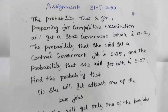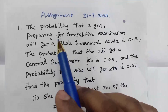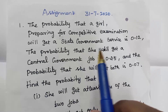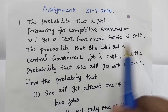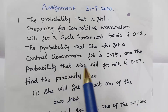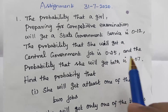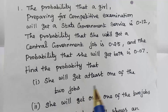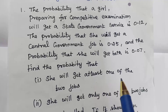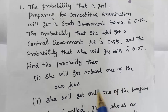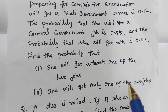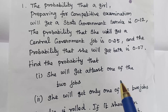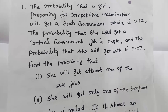I gave three problems. First one: the probability that a girl preparing for competitive examination will get a state government service is 0.12. The probability that she will get a central government job is 0.25. And the probability that she will get both is 0.07. Find the probability that she will get at least one of the jobs. Second part: she will get only one of the two jobs. I asked you to do the sum by reference of exercise 12.26.